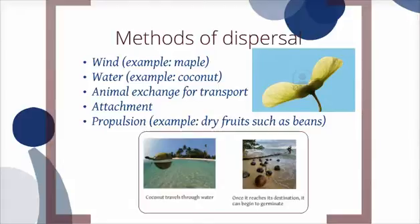The maple uses wind to break off its seeds and carry them elsewhere. Fruits can also be eaten by animals and then transported in their bodies. Some fruits can be spiky and attach themselves to other things that will then be moved to different locations.